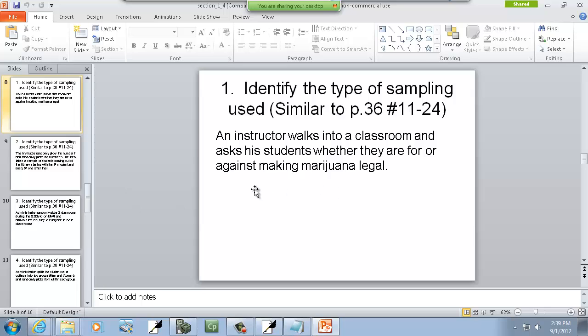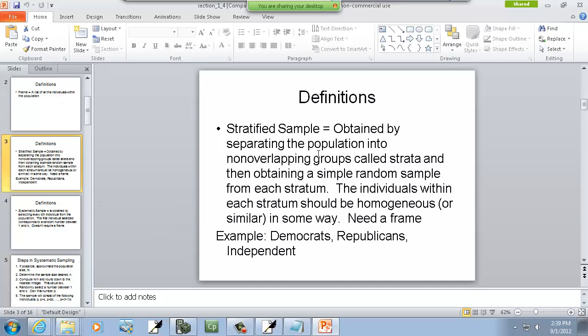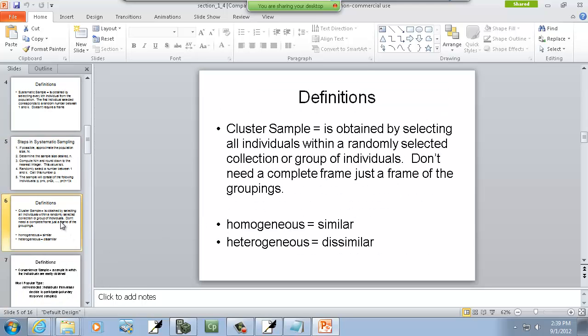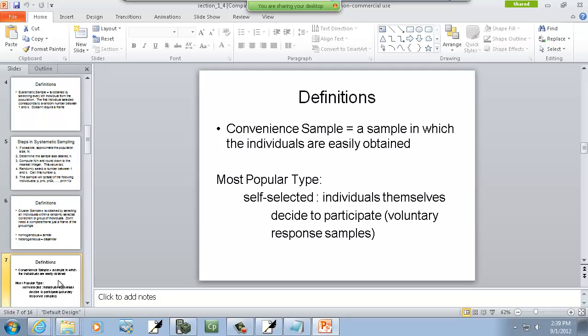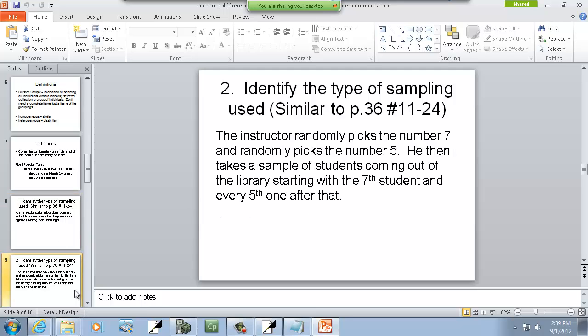Now, let me end this. Instructor walks in the classroom, asks the students whether they are for or against making marijuana legal. So, come up here. Stratified sample? Well, I don't really break the population into non-overlapping groups because we're assuming the population is like all students. Systematic? I'm not talking like every fifth person. Cluster? It's obtained by selecting all individuals within a randomly selected collection or group of individuals. Don't need a complete frame. Just frame the groupings. No, that doesn't seem to work. Convenience. Sample which the individuals are easily obtained. This is convenient, isn't it? Walk into the classroom and you've got students right there. You don't have to do any kind of effort to try to collect a sample. Just ask them.